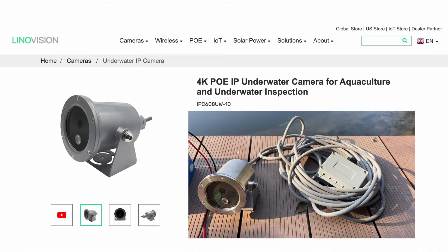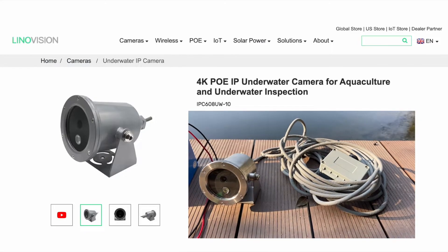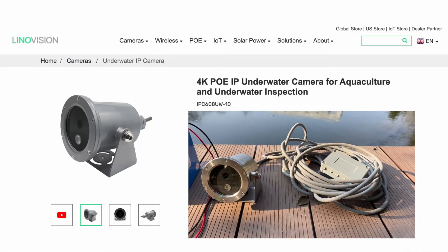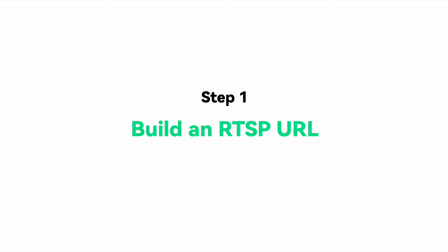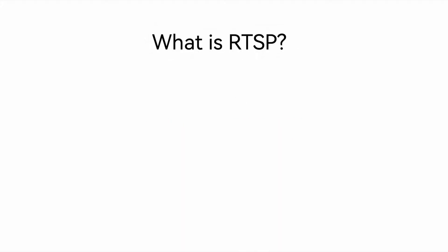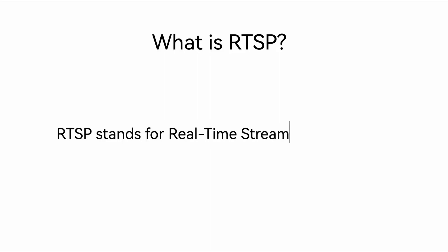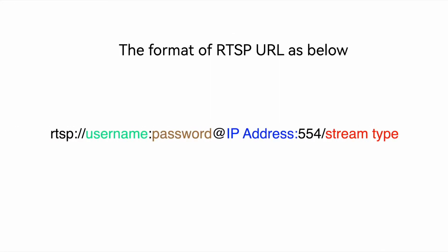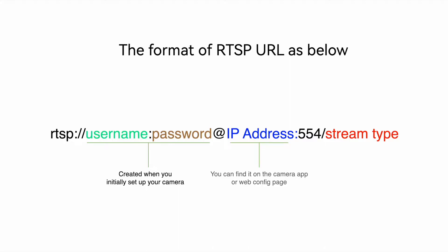Of course, you also need a Lenovation underwater camera, which can be purchased from the Lenovation online store or Amazon. First, you need to build an RTSP URL, which will be required in later steps. You'll need the IP address of your camera, which you can find on your camera app or web client. The RTSP URL contains the camera username and password you created when you initially set up your camera.